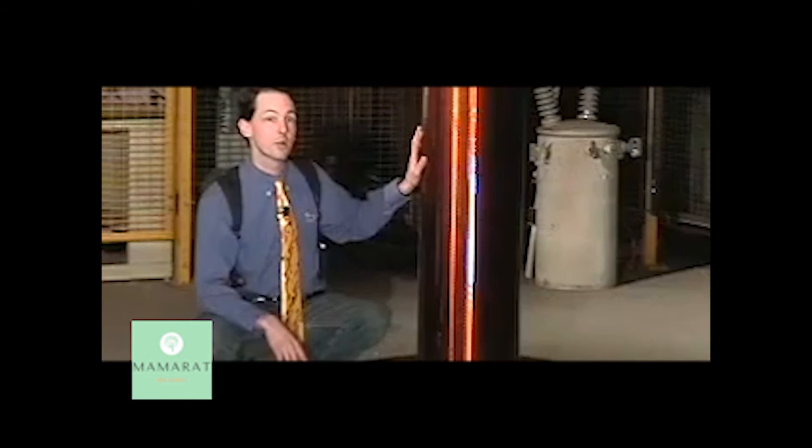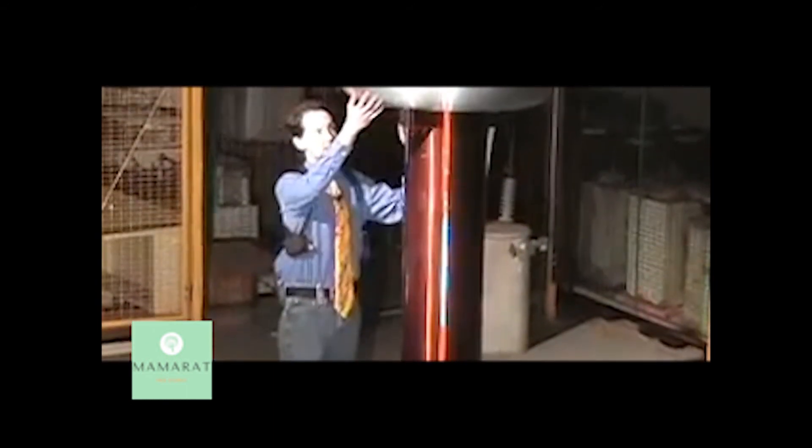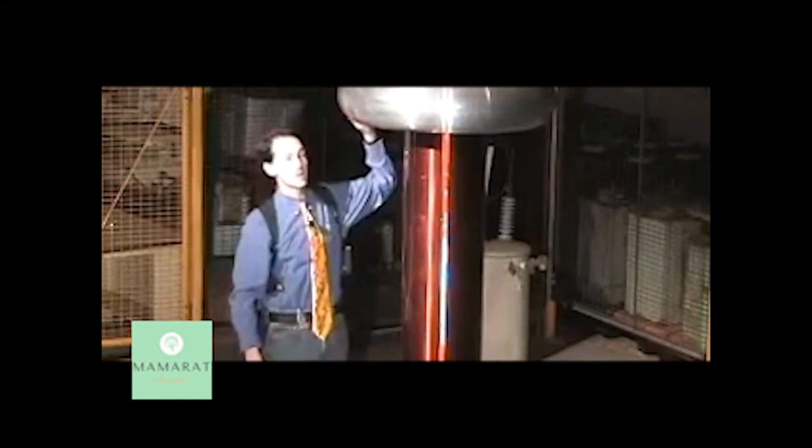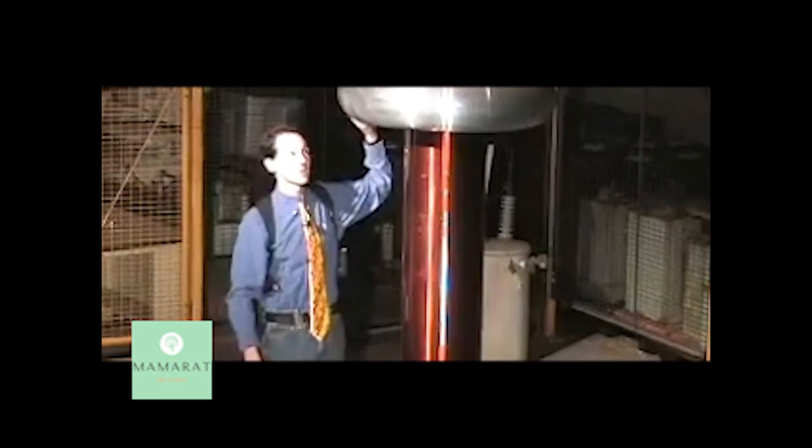The top of the secondary coil comes off up here and connects to this large top load. This is a nice spun aluminum toroid, and that's all it is. It's a big piece of aluminum that's nice and smooth.